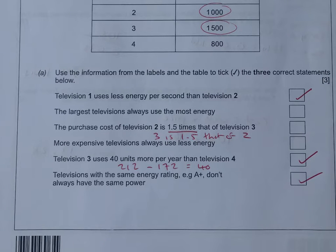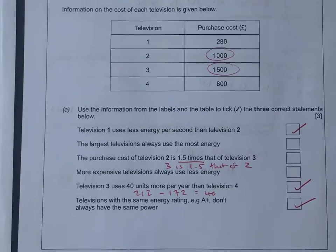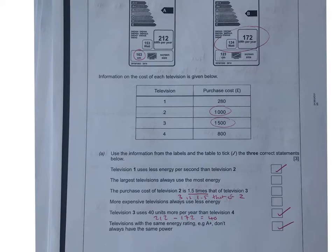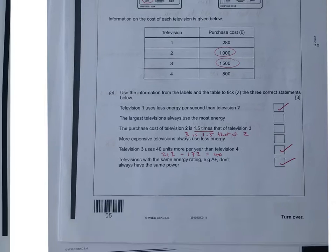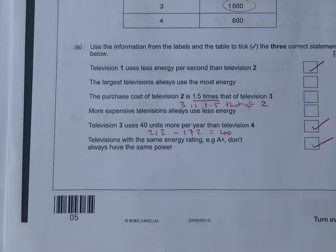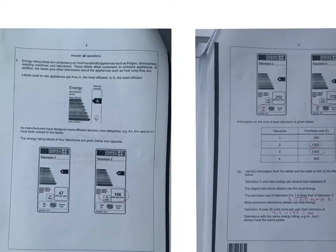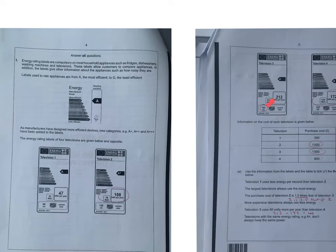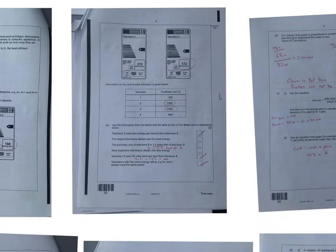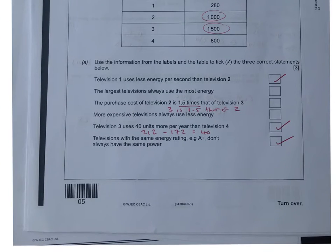More expensive televisions always use less energy. I would compare television three because that's the most expensive, and then go down to television two to see if it uses less energy, but the statement's false. Television three uses 40 units per year more than television four. Subtract one from the other, and it works out to be 40 units less, so that statement's true.